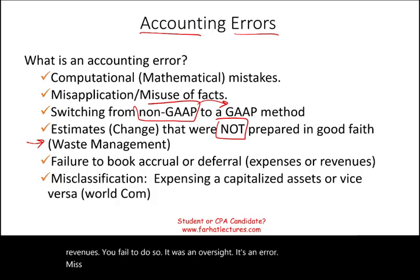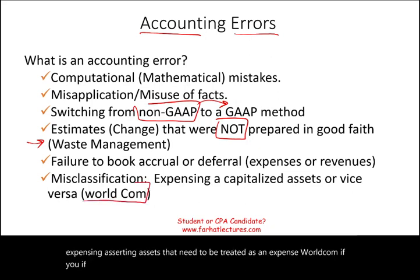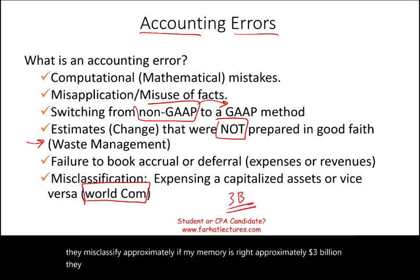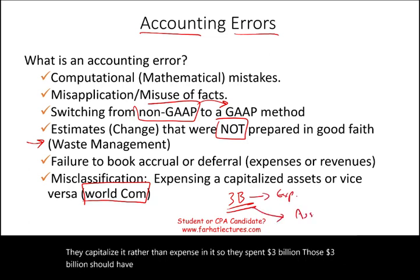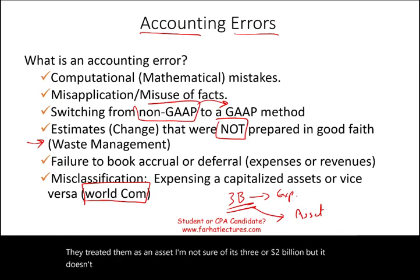Misclassification of expenses — capitalizing expenses that should be expensed — is another error type. Look up the WorldCom Fraud: they misclassified approximately $3 billion, capitalizing it rather than expensing it. They spent $3 billion that should have been expensed, but they treated it as an asset. The amount was large, and now they're gone.